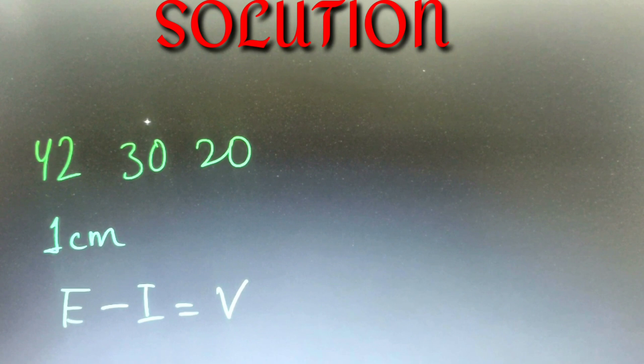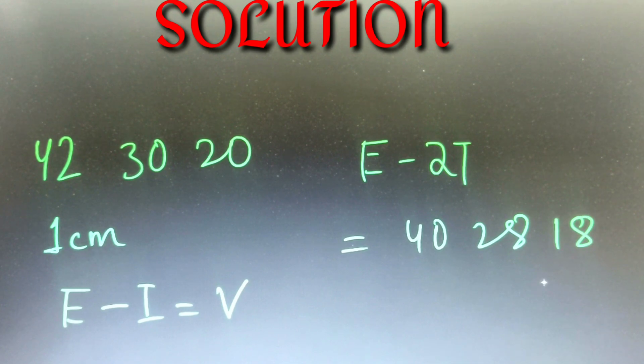We are given the external dimensions in the question and we have to calculate the internal dimensions. In such cases where thickness is given, the formula is external dimension minus twice the thickness. The external dimensions are 42, 30, and 20 respectively, so the internal dimensions will be 40, 28, and 18 respectively.